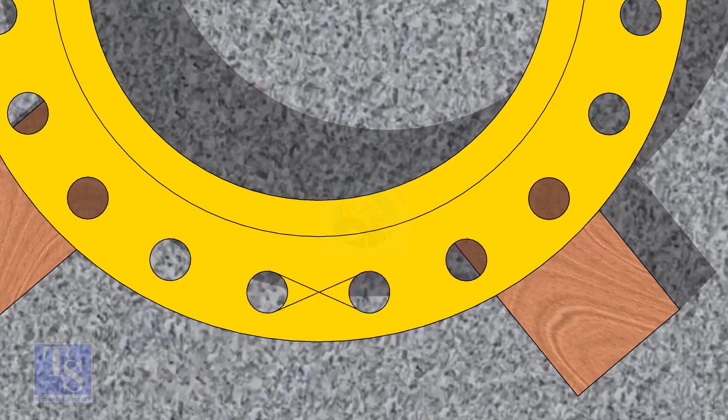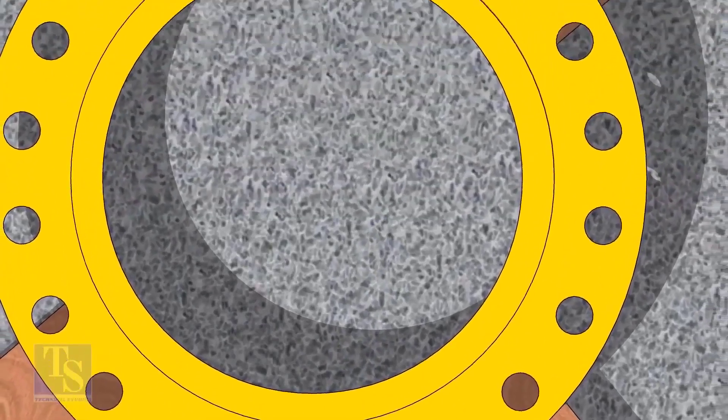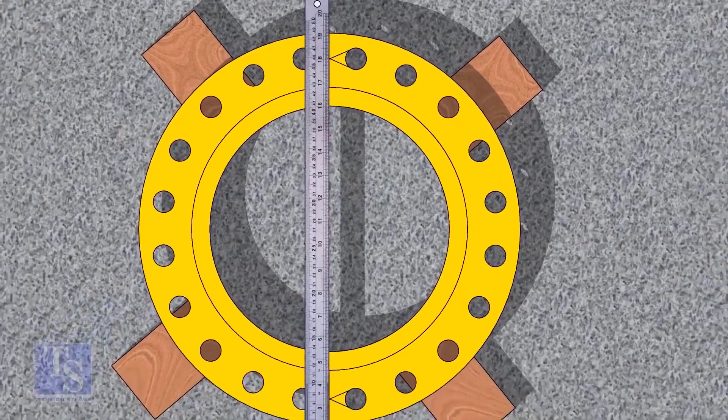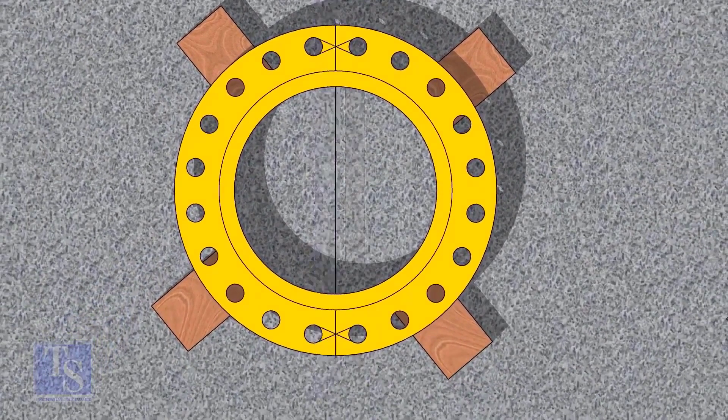Draw the center of the two holes on the opposite side. Draw the center line of the flange as shown.